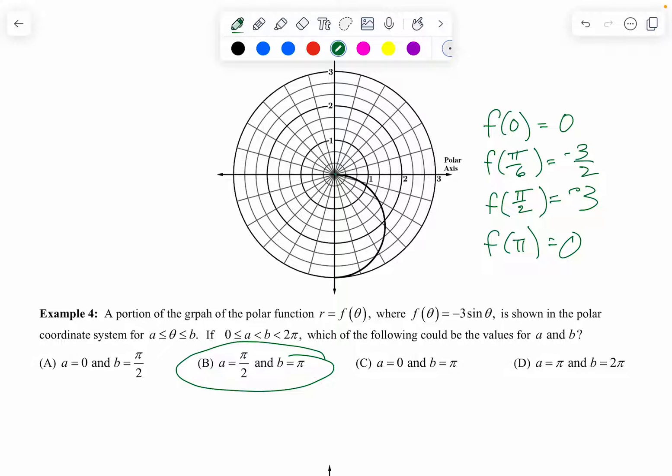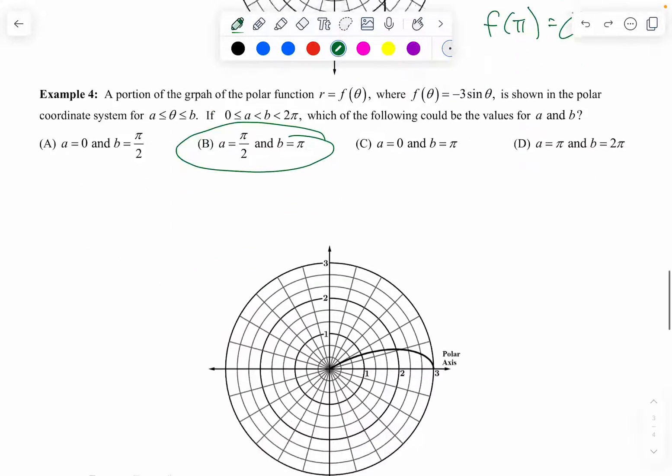That was a mess, but hopefully you kind of understand what I was looking at there. So I would say the answer is from pi over two to pi. Do we have other options? The first one, zero to pi over two, zero to pi over two is going to take us this way. I think B is the correct answer. Zero to pi is going to do the whole circle and the pi over two to two pi is going to do the whole circle also. So I am confident with answer choice B.